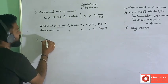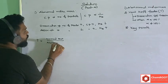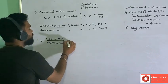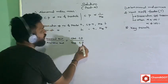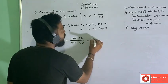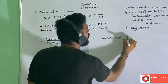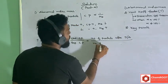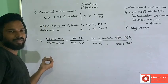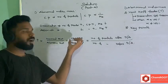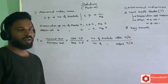The formula we have for the Van't Hoff factor (i) is: normal molecular weight divided by abnormal molecular weight, or observed colligative property divided by expected colligative property, or number of particles after dissociation or association divided by number of particles before dissociation or association.